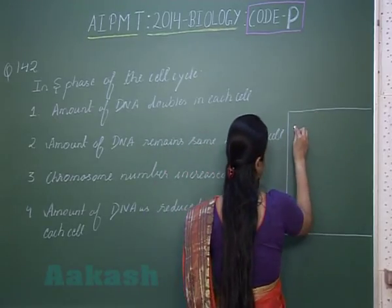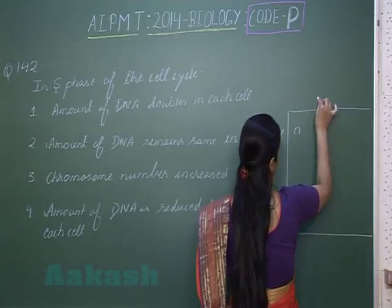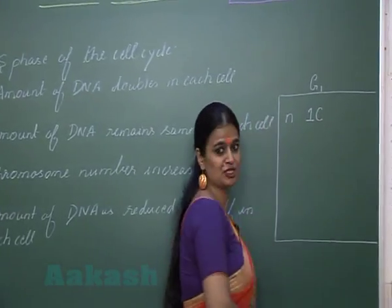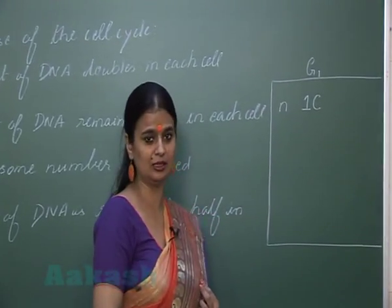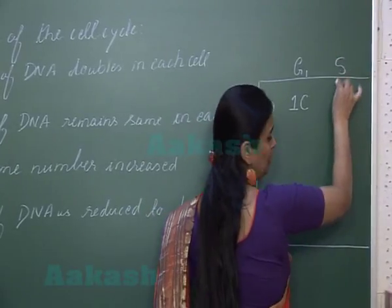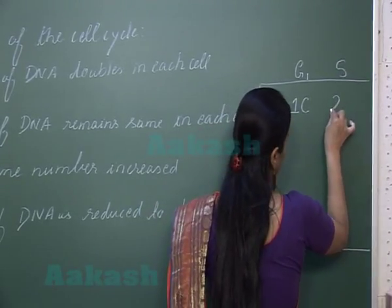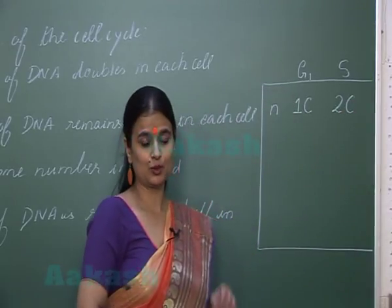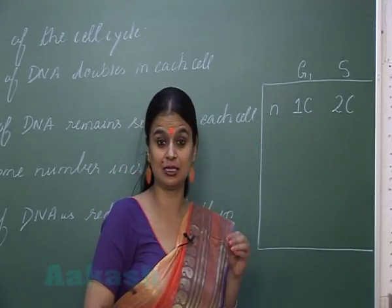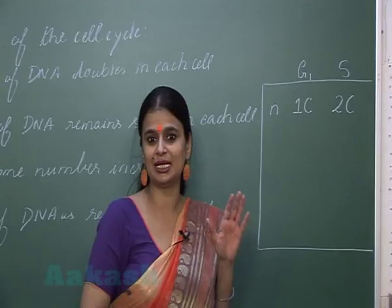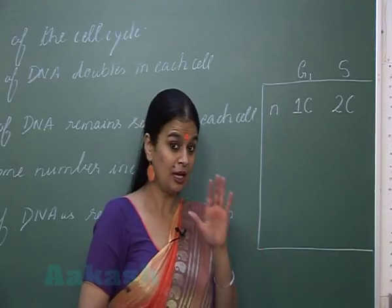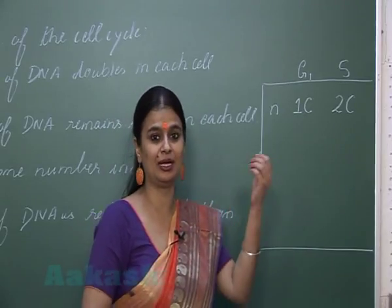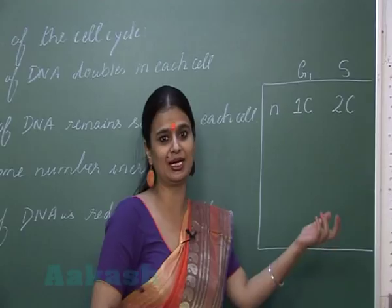Consider a haploid cell in G1 phase. The concentration of DNA present is 1C. In S phase, DNA duplication occurs, so the concentration doubles from 1C to 2C. However, the ploidy of the cell and the number of chromosomes remain the same, so the haploid cell remains haploid even in S phase.